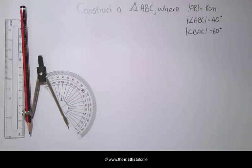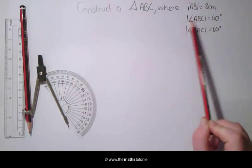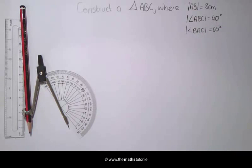We are going to construct a triangle given two angles and the side between these two angles. In this example we are going to construct a triangle ABC where AB is equal to 8 cm, one of our angles is equal to 40 and the other angle is 60. We start by drawing a rough sketch of our triangle.